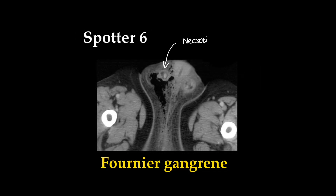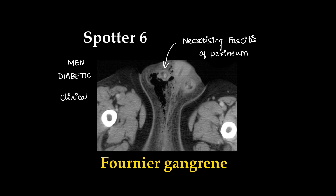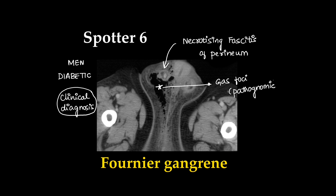This is a clinical diagnosis, nothing but necrotizing fasciitis of the perineum, most commonly occurring in men who are diabetic. Air foci are the pathognomonic features. Here we can see fat stranding also.